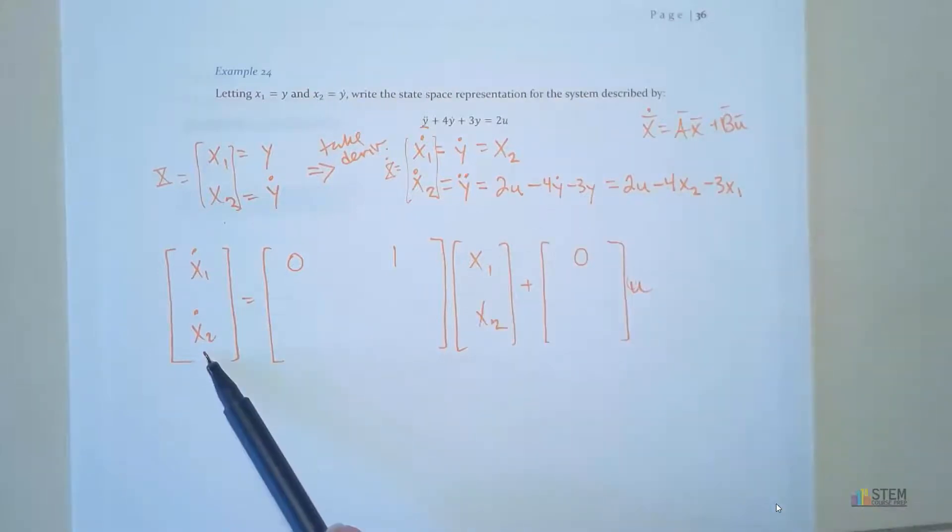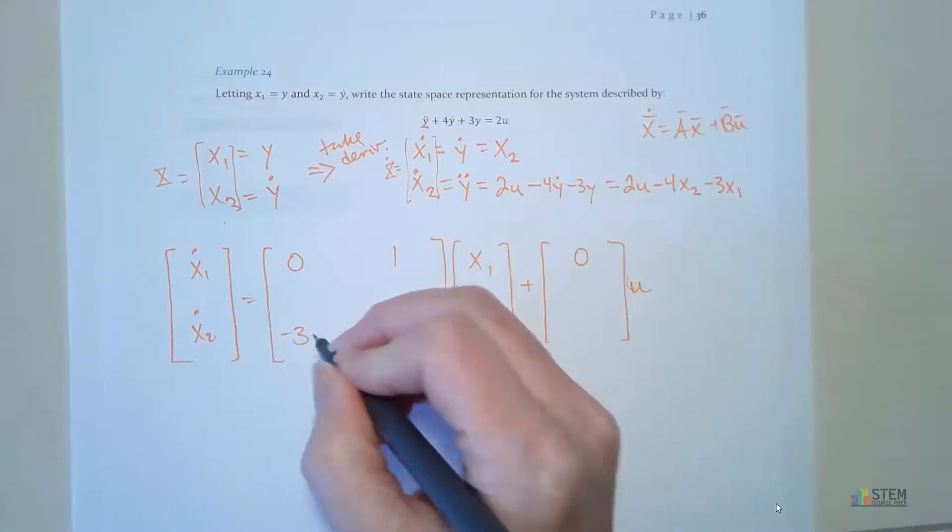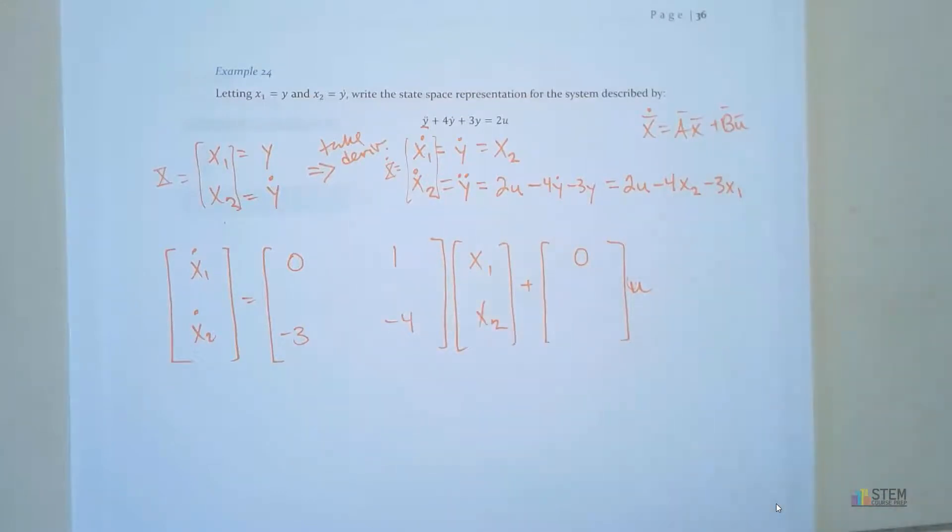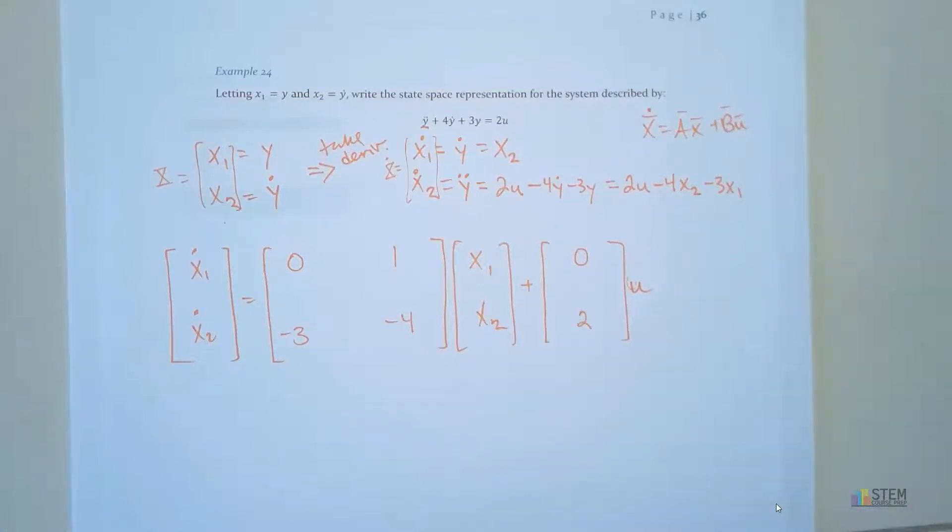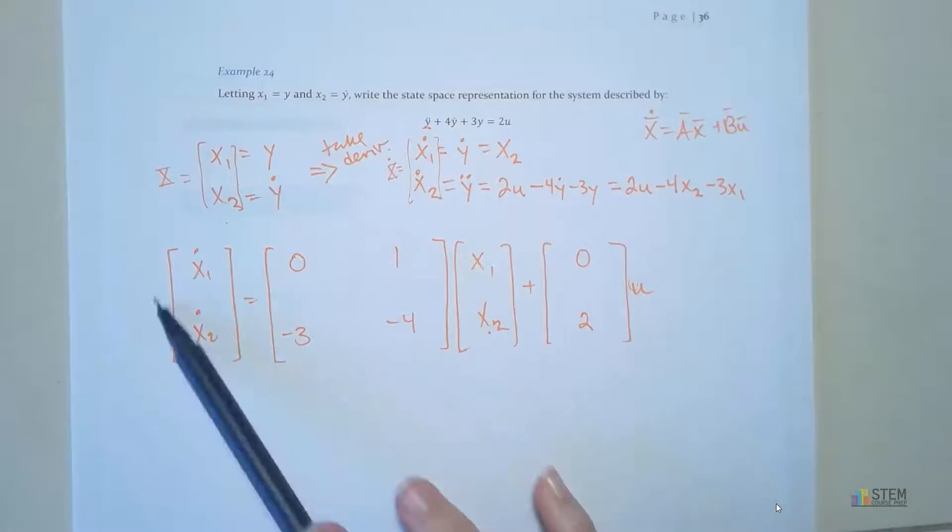Now let's do the same thing here. So x1 is multiplied by negative 3. So that goes here. x2 is multiplied by a negative 4. That goes there. And then u, which is our input, is multiplied by 2 for the x2 dot equation. So now if you multiplied this out, make sure it gives you the same thing. We got negative 3x1 minus 4 times x2 plus 2 times u. That's exactly what we had here. So there is the first part of your state space representation.